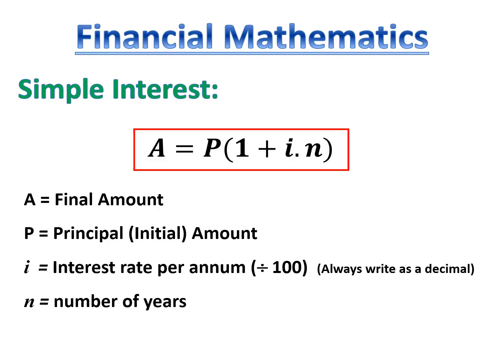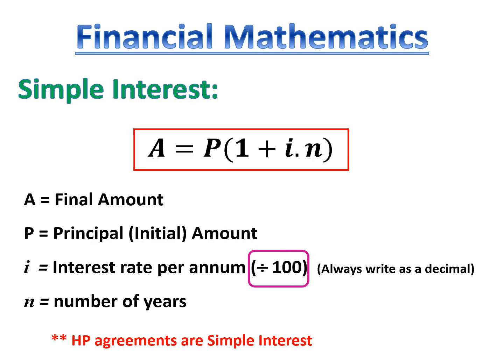N stands for the number of years. In financial mathematics, the one agreement that always uses simple interest is a hire purchase agreement. This is usually used when you buy small appliances like a television, fridge, or dishwasher. It basically means you're renting the machine until you've paid it off in full, at which point it becomes your own.